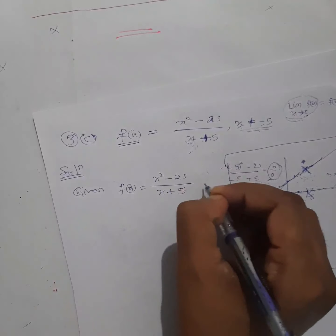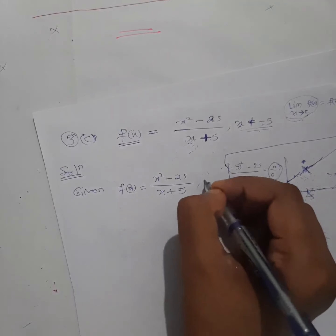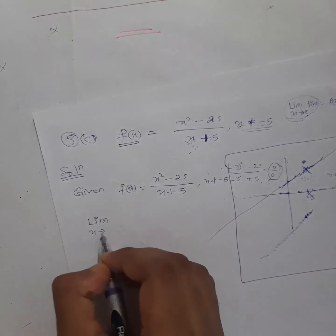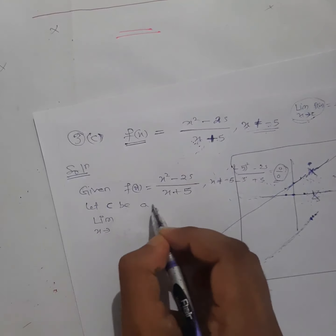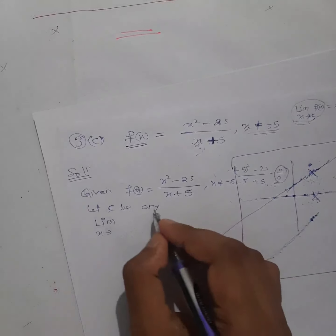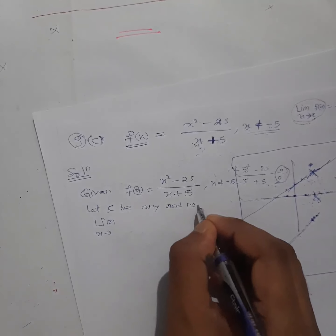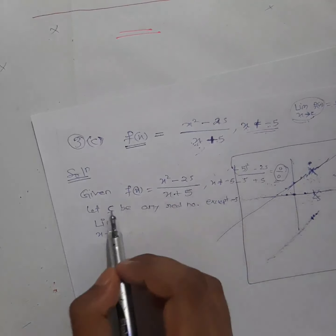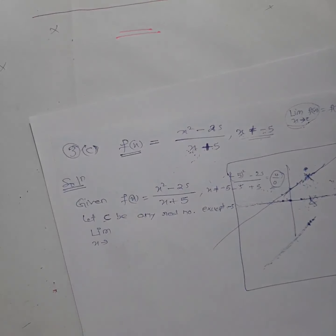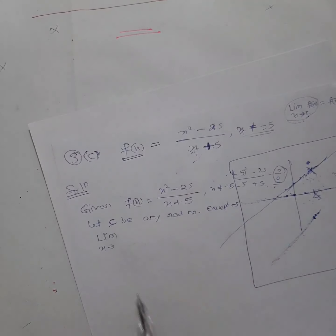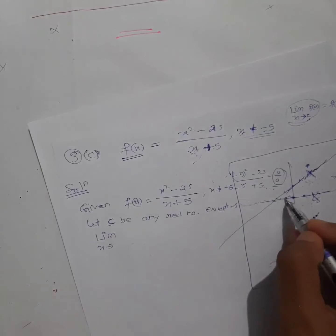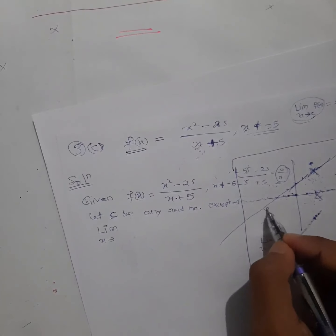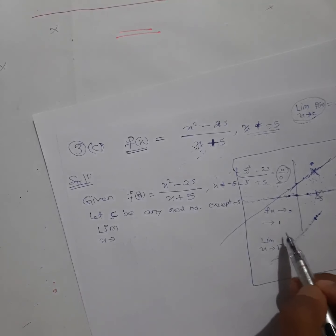Given: f(x) = (x² - 25) / (x + 5), x not equal to -5. I am following the same steps as in questions 1, 2, and 3a and 3b. Let c be any real number — since I cannot check all points one by one, I take a general point c. C can be anything: 0, 1, -1, -2, anything except minus 5.